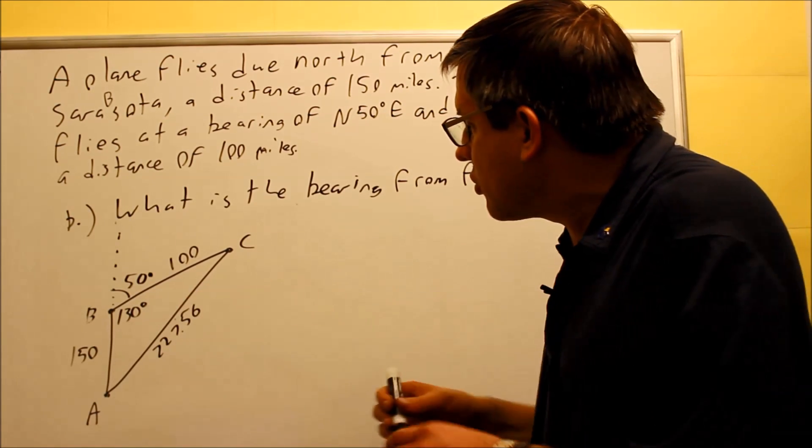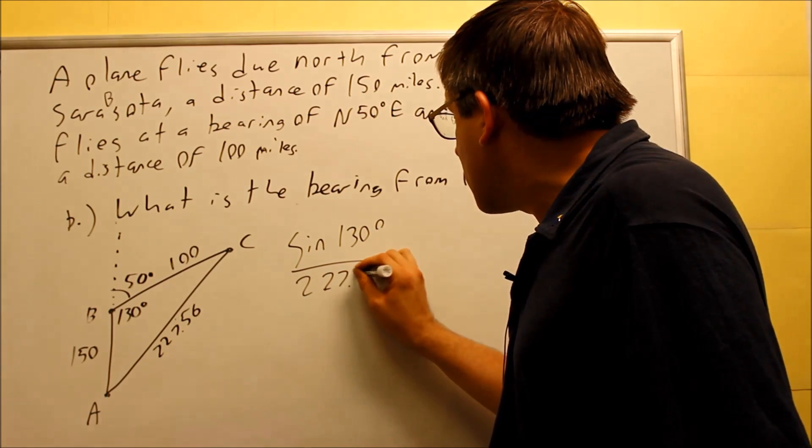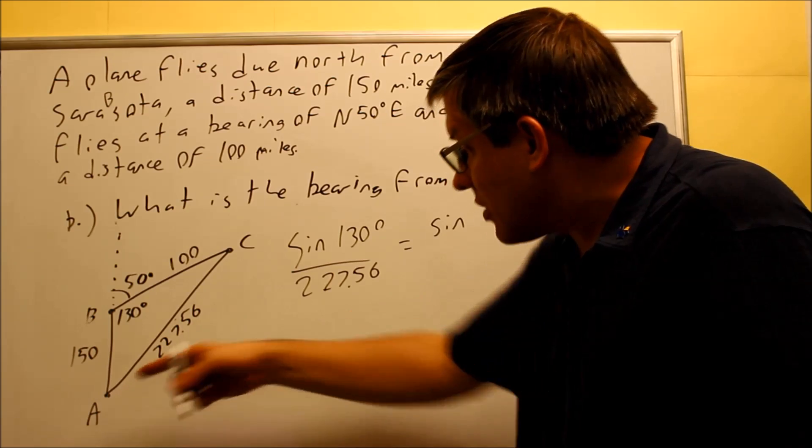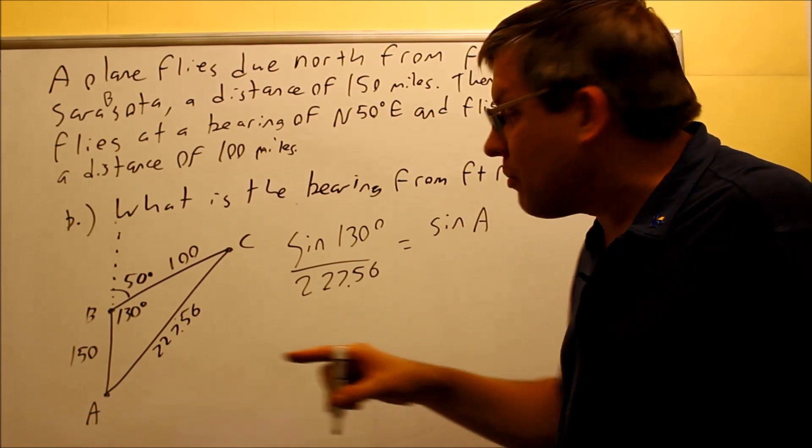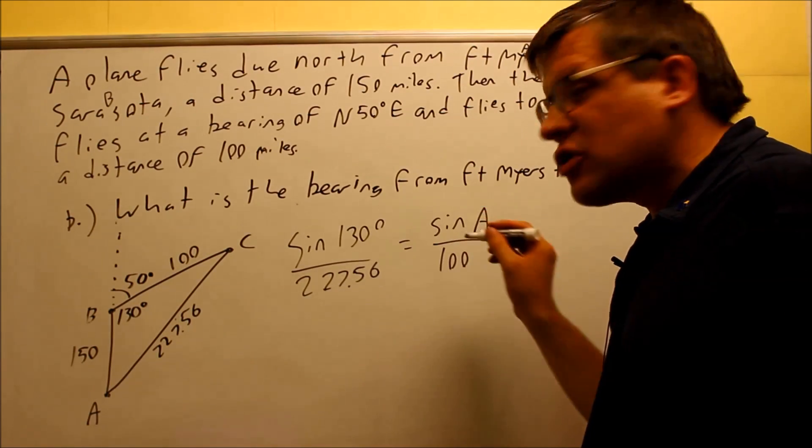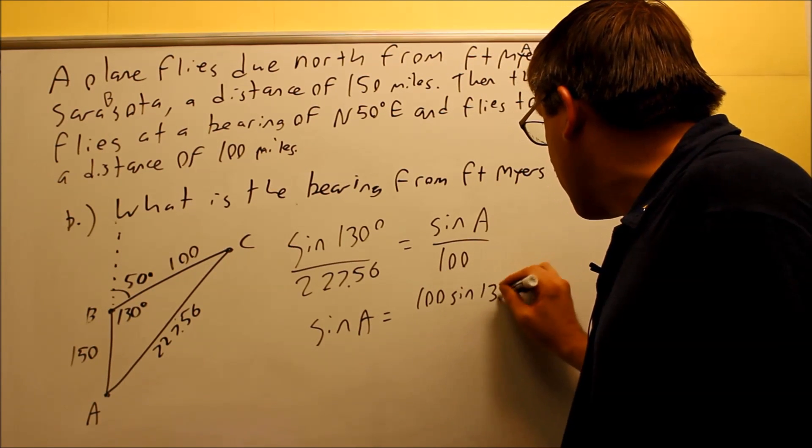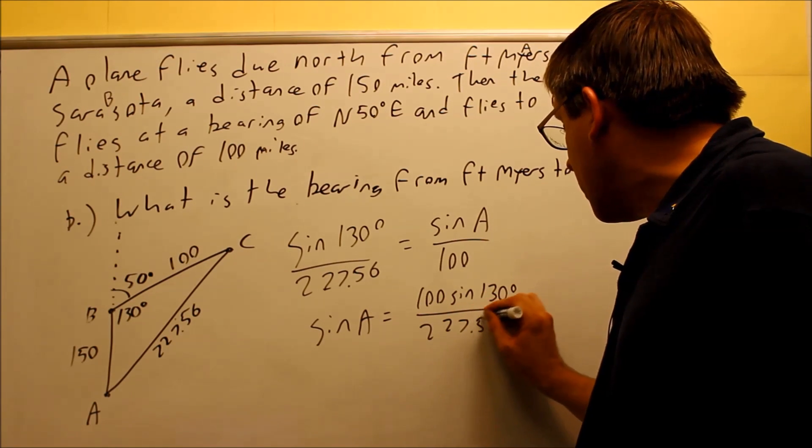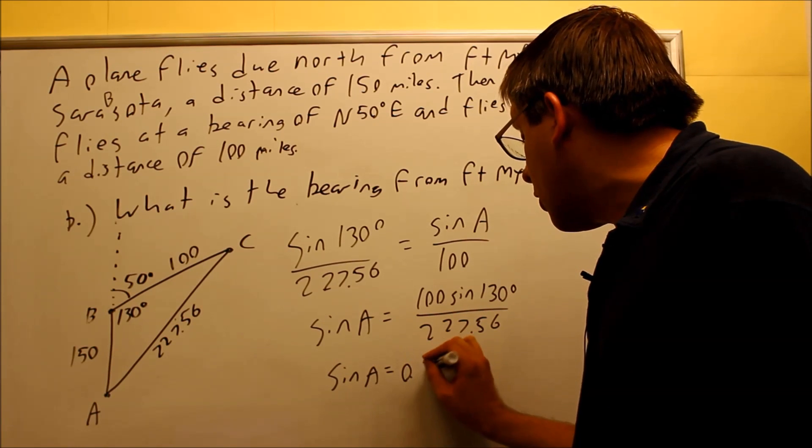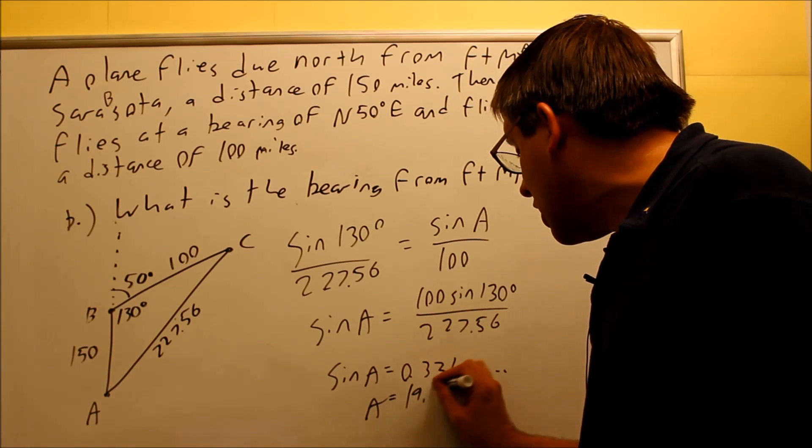Let's go ahead and set it up. We have our known ratio. We're going to do sine of 130 over 227.56, this is the answer we got in part A. And then that's going to be equal to, we're solving for A, that's the angle we're looking for here, that's where we want the bearing from that point. And that's going to be over 100 because 100 is opposite angle A. We're going to cross multiply and we're going to solve for sine A. We get sine A is going to equal 100 sine of 130, and that's going to be over 227.56. If you put this into your calculator, you're going to get .33604 with some more decimals, and you're going to take the inverse and we get 19.64.